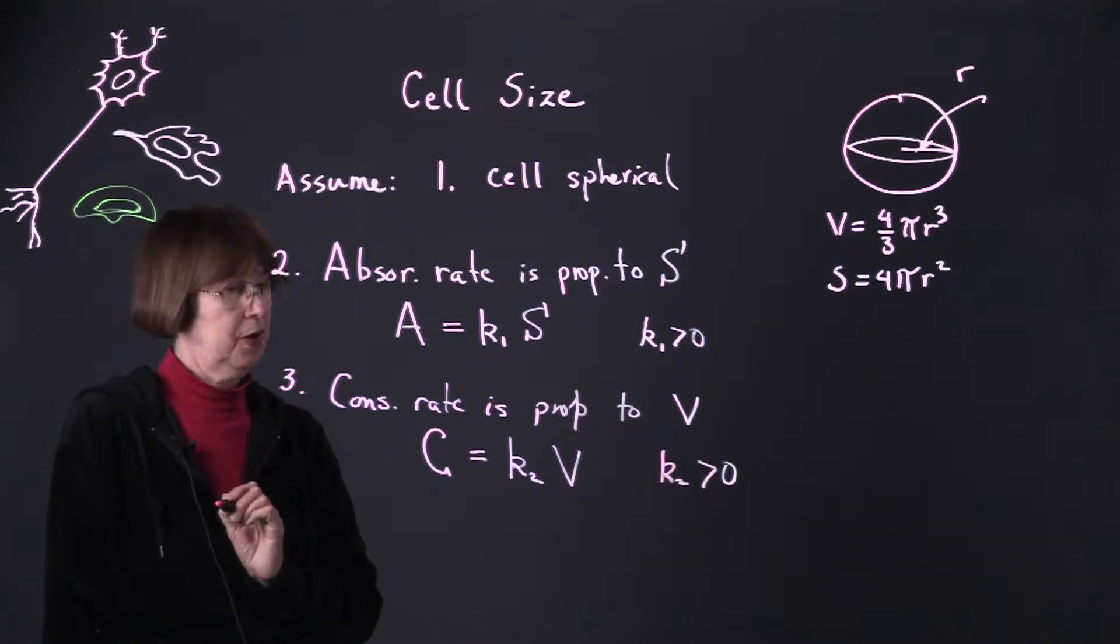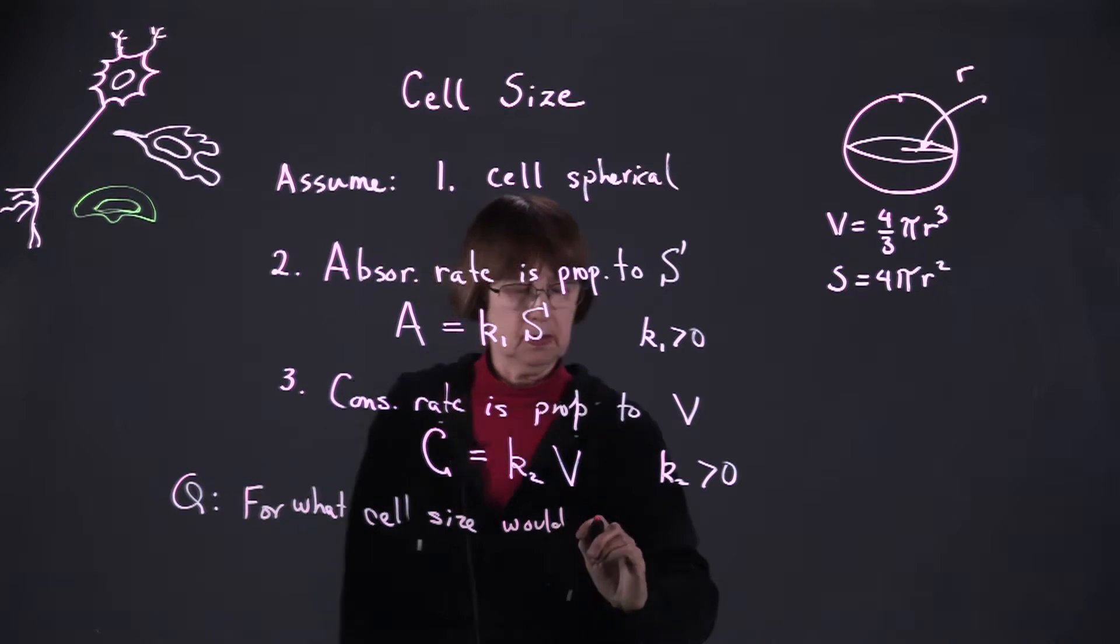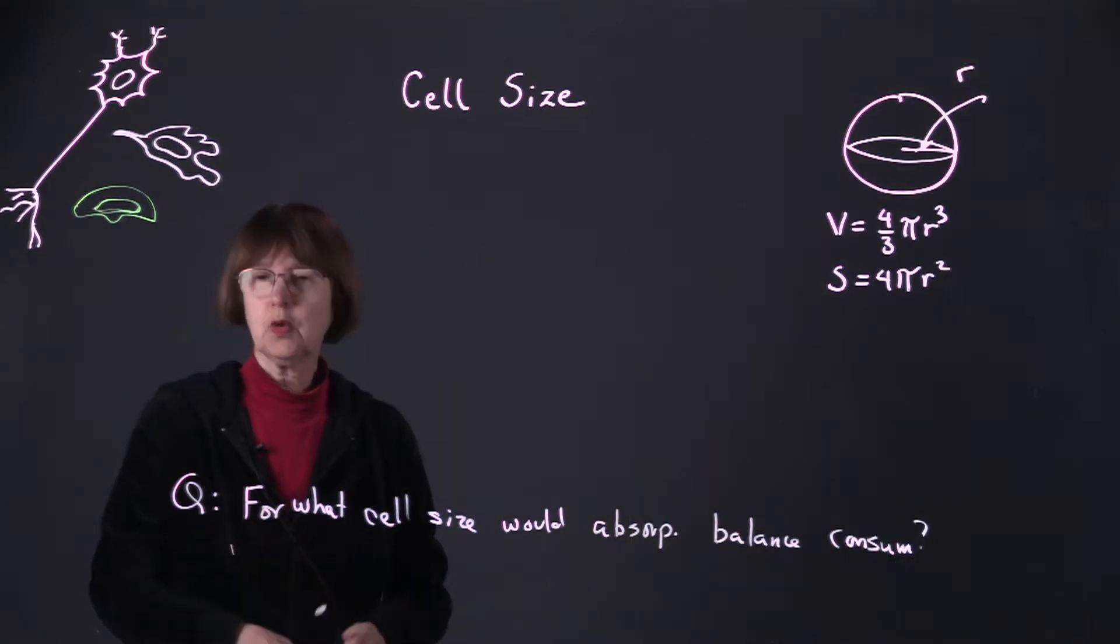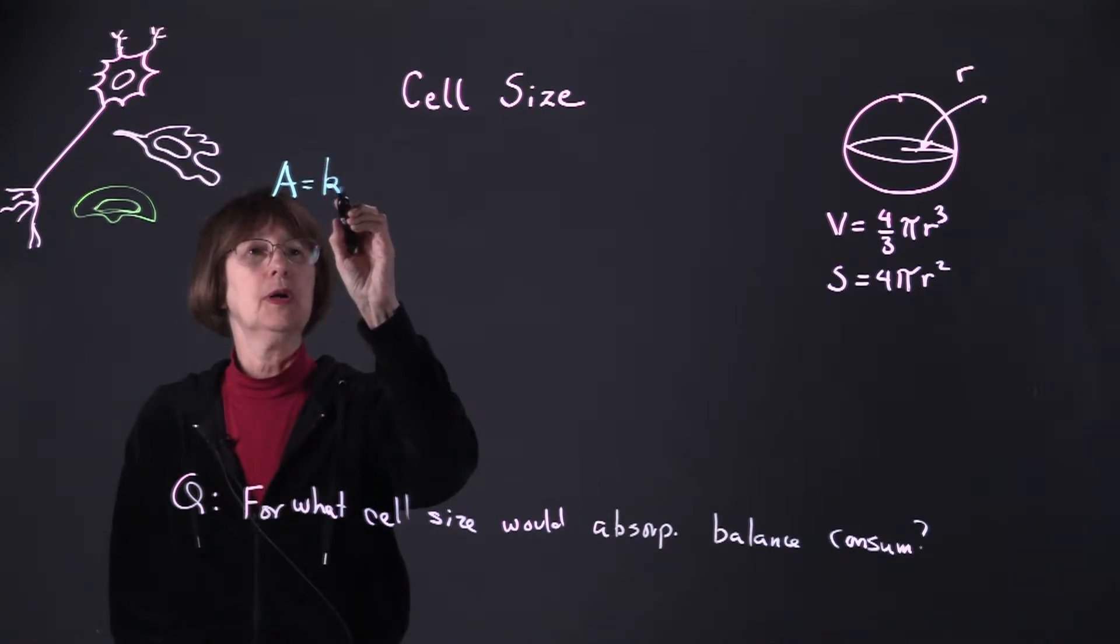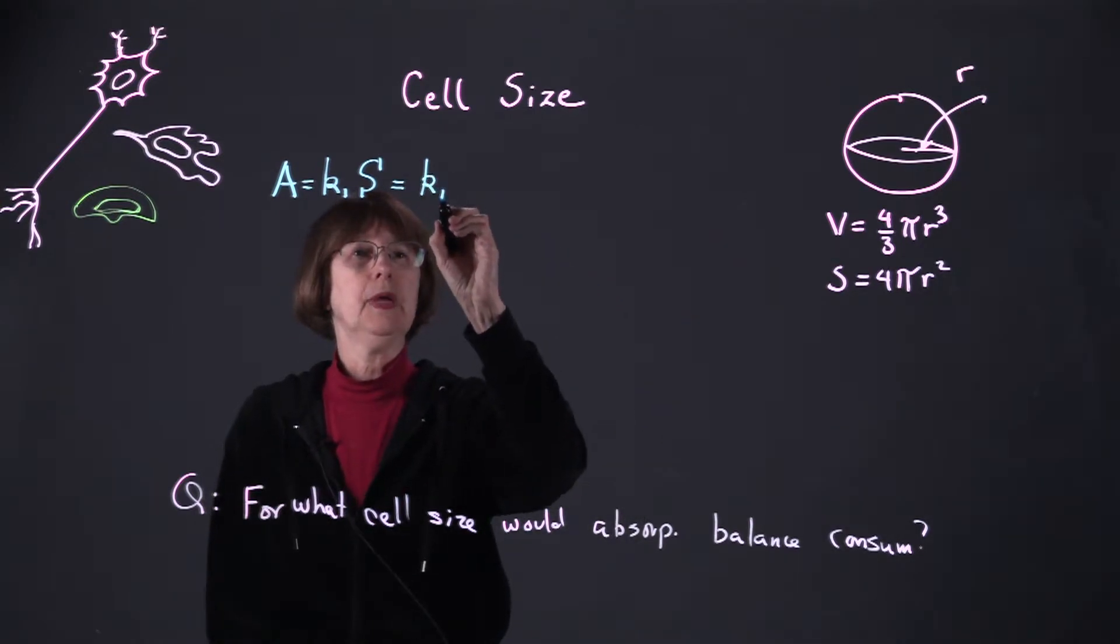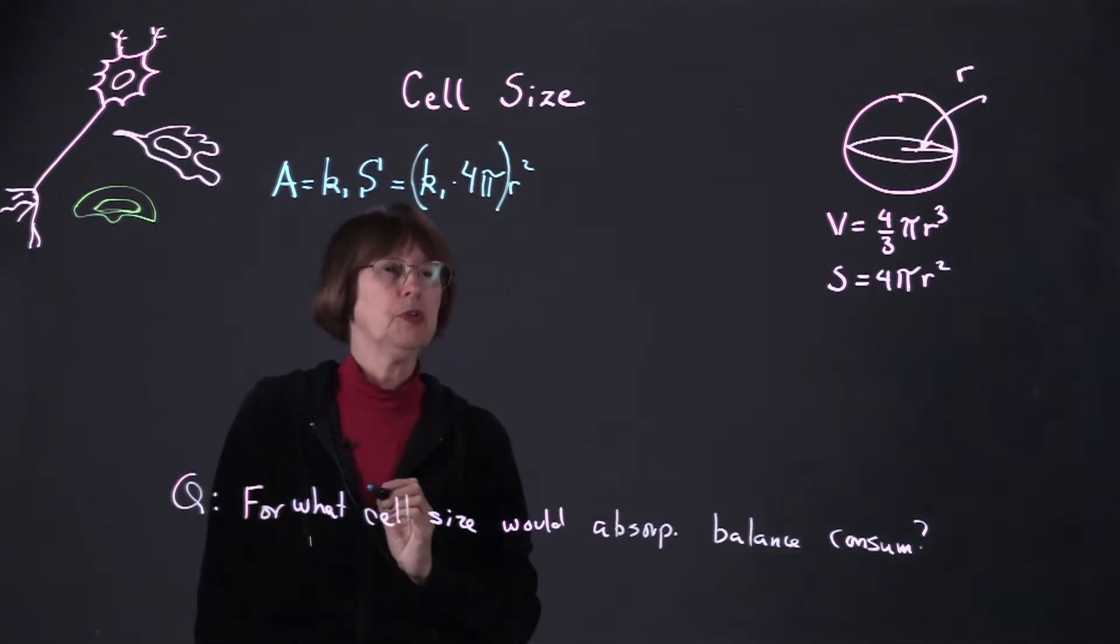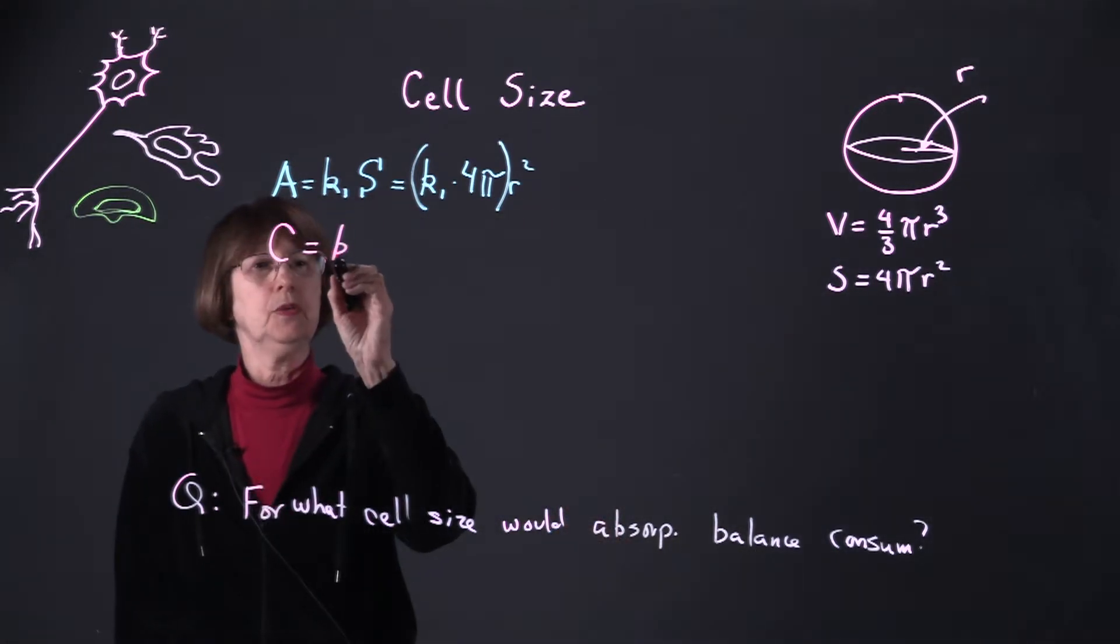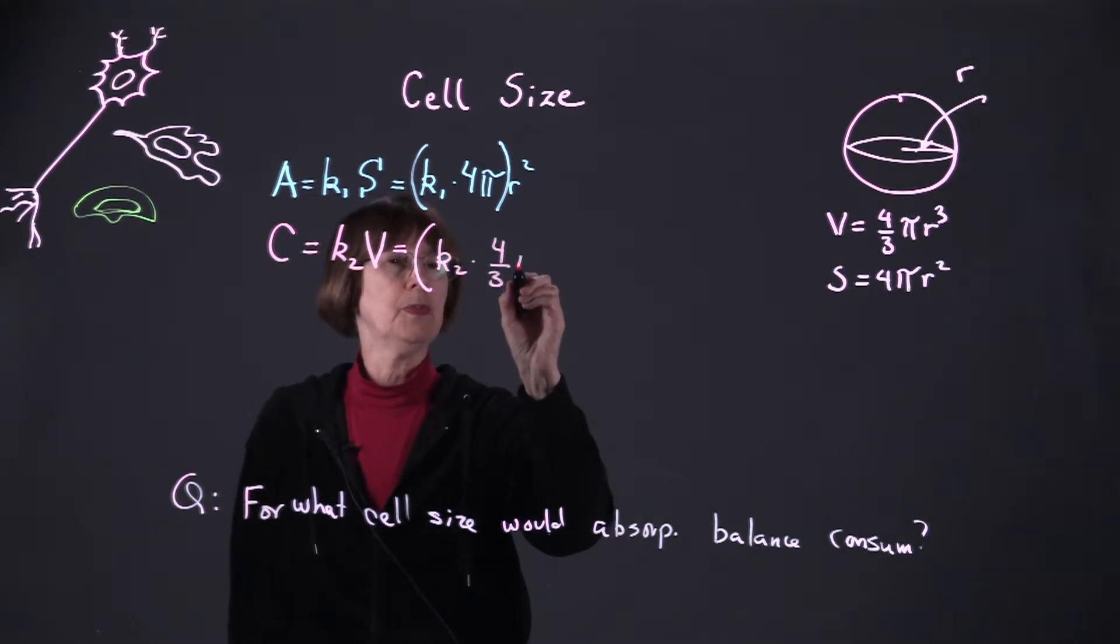We'd now like to ask the following question: For what cell size would nutrient absorption balance nutrient consumption? To answer this question, let's write down what we know. The rate of absorption is some constant times the surface area for the spherical cell. We can rewrite this as k₁ times 4πr², and we'll group these constants together to make it obvious that we've got a power r². The consumption rate is k₂ times the volume, so here we have k₂ times 4/3πr³.